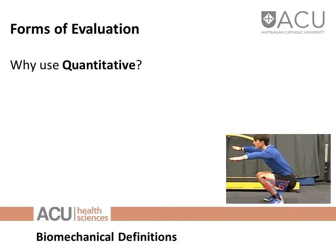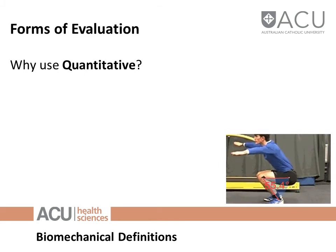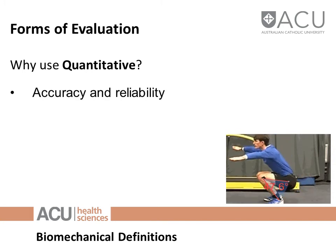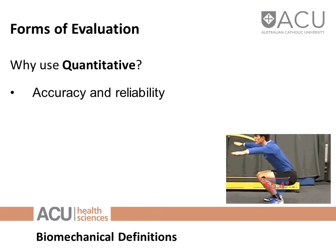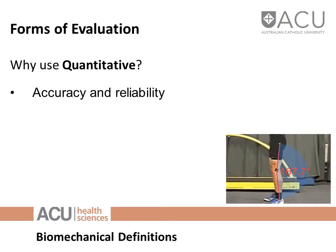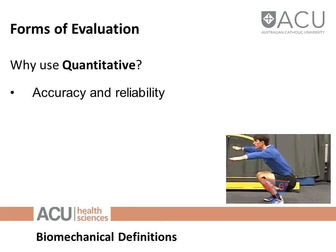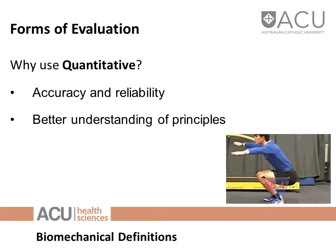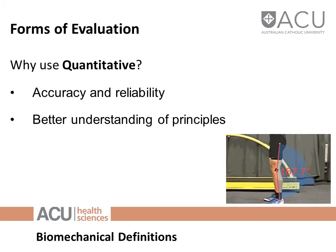However, there are situations where it's quite advantageous to introduce quantitative evaluation of someone's mechanics. For example, measuring angles over time in a squat gives a more precise measurement. Accuracy, precision, and reliability are advantages of quantitative measures. Two people might look at an angle and estimate 90 or 80 degrees differently, and this becomes very difficult when measuring velocity and acceleration. When we quantitatively measure mechanics, we get consistency between raters, accuracy, precision, and a better understanding of principles — including things we can't see, like forces through joints.